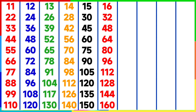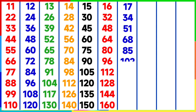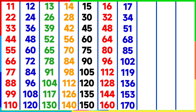16 tens are 160. Table of 17: 17 ones are 17, 17 twos are 34, 17 threes are 51, 17 fours are 68, 17 fives are 85, 17 sixes are 102, 17 sevens are 119, 17 eights are 136, 17 nines are 153, 17 tens are 170.